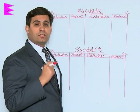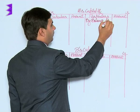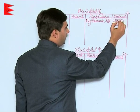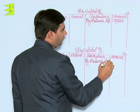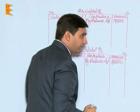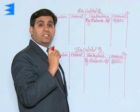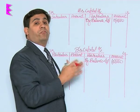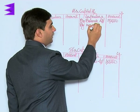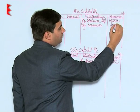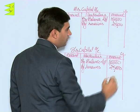Coming to the partners' capital accounts: A had a balance of ₹1,50,000 and B had ₹1,00,000 in the balance sheet, both recorded on the credit side as 'by balance brought down.' There was also a reserve of ₹50,000 in the balance sheet, representing accumulated profits before dissolution, which is divided equally — ₹25,000 each to A and B as 'by reserves.'